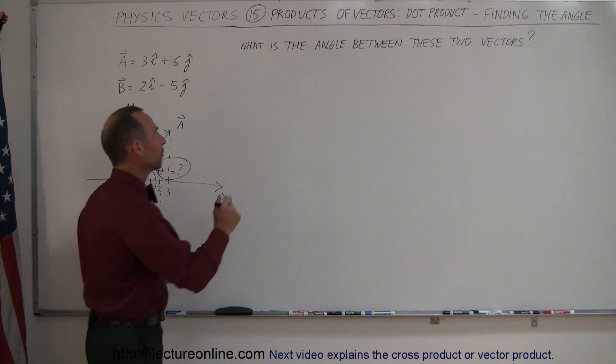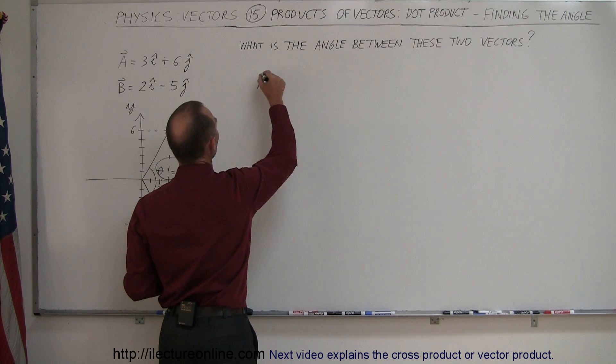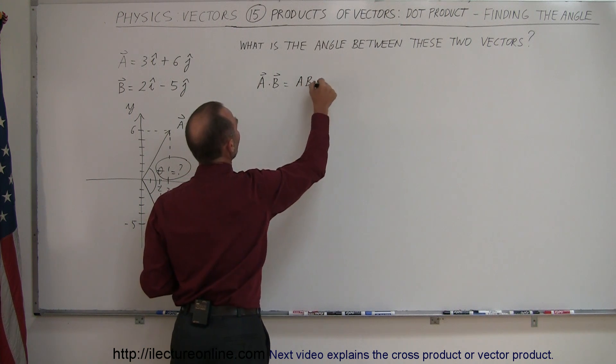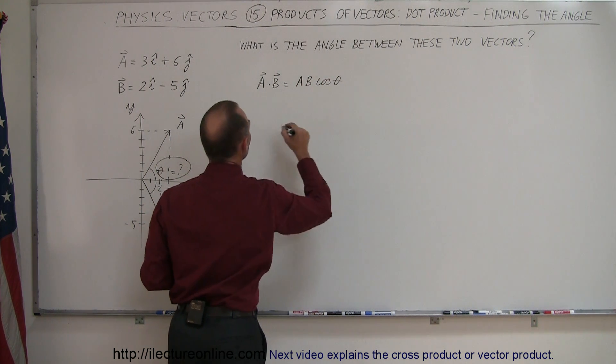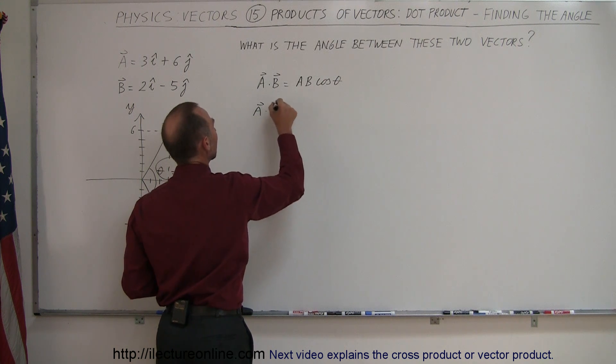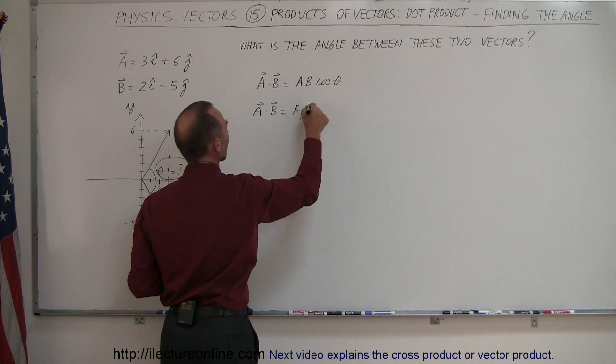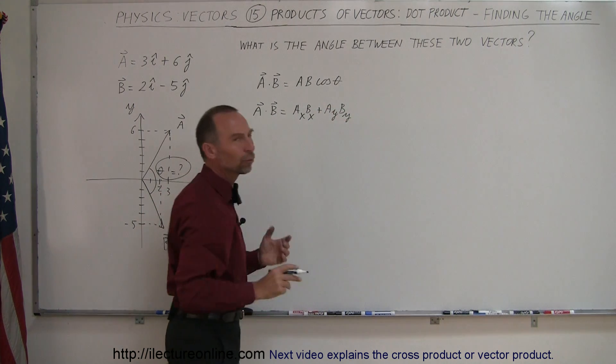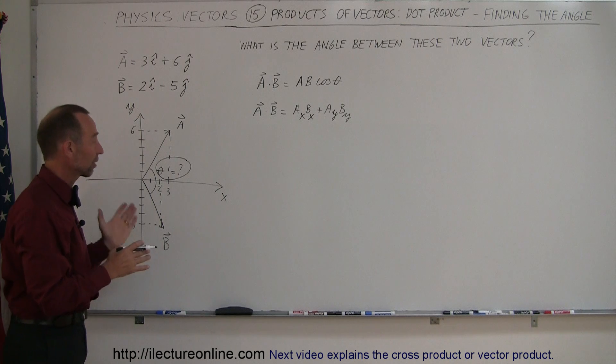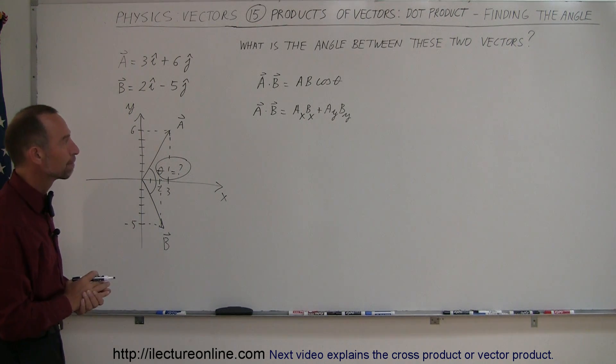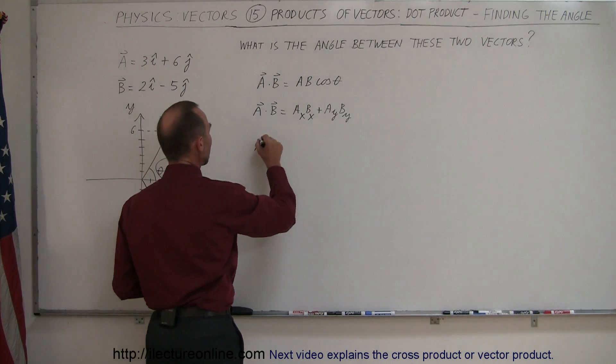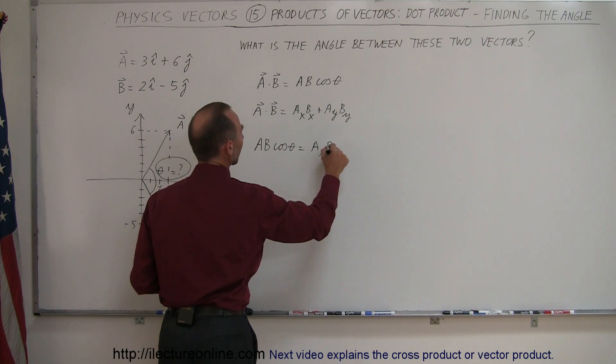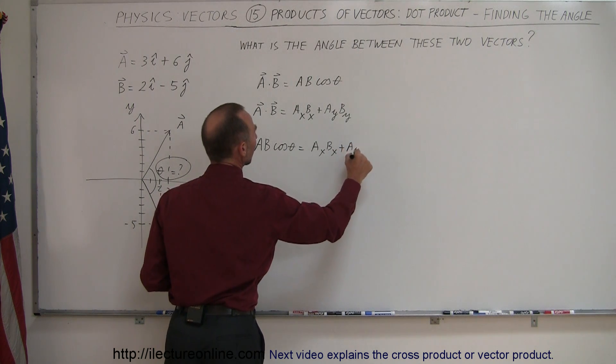Now, notice that to find the dot product, we say that A dot B is equal to A times B times the cosine of the angle between them. And we can also say that A dot B is equal to AX BX plus AY BY. We only need to go two terms because there's no z-direction here. This is a two-dimensional plane. If that's true, we can then say that AB times the cosine of theta is equal to AX BX plus AY BY.